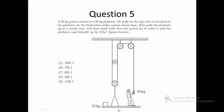Question 5. A 50 kg person stands on a 25 kg platform. He pulls on the rope that is attached to the platform via the frictionless pulley system shown here.